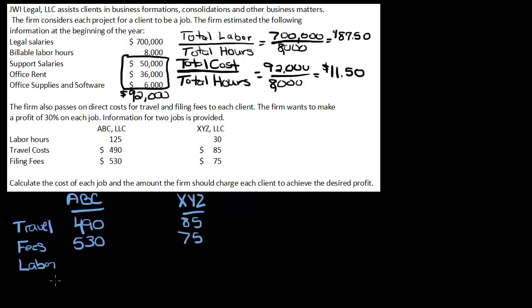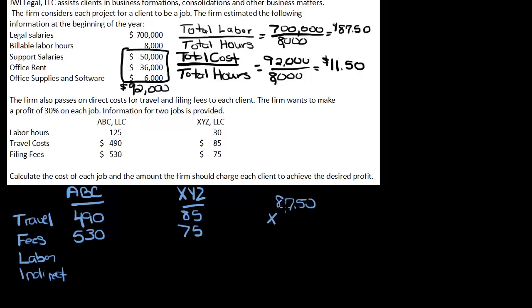Now let's add labor and indirect costs. For ABC, we've got 125 hours times $87.50. So 87.50 times 125 equals $10,937.50. So total labor costs are $10,937.50.